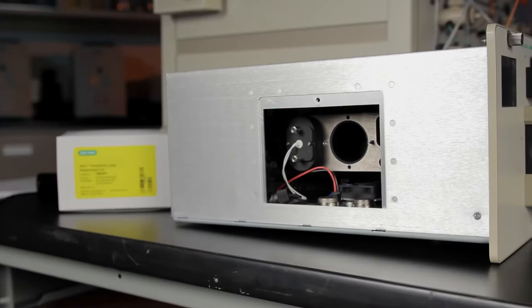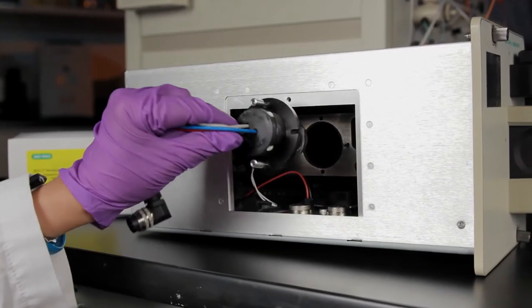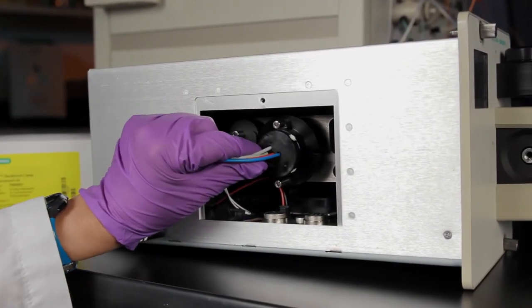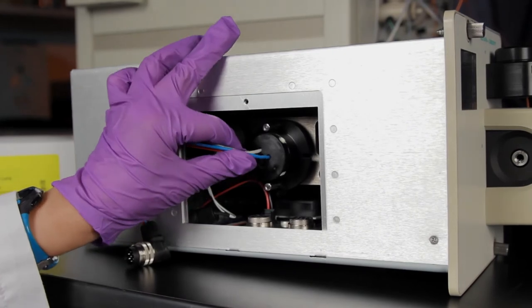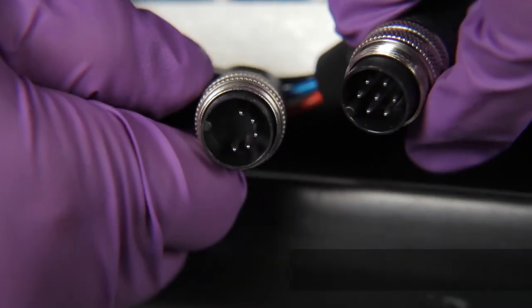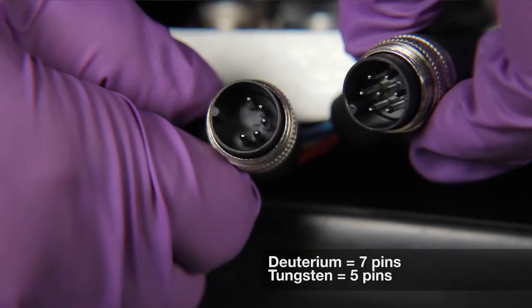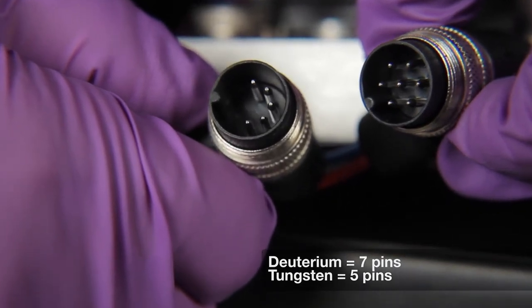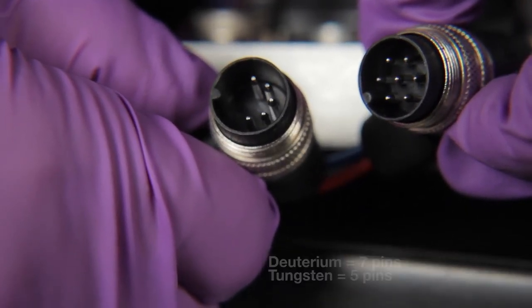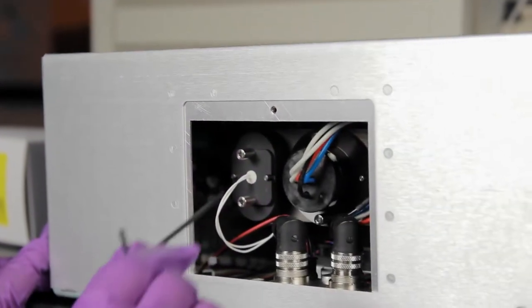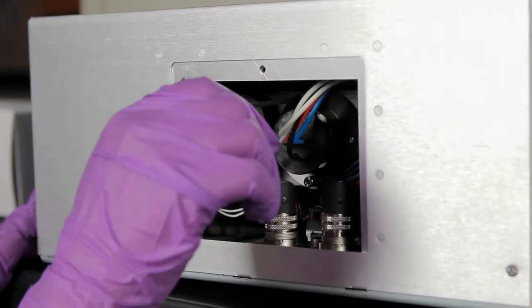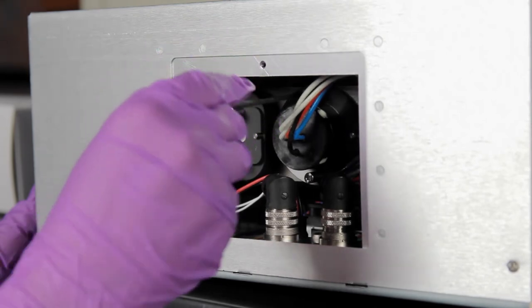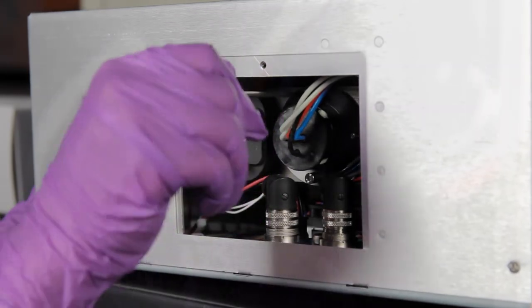Next, carefully insert the replacement lamp into the socket and align the screw holes on the lamp casing. To prevent confusion, the deuterium lamp has a 7-pin connector, while the tungsten lamp uses a 5-pin connector. Now grab your 2.5 millimeter hex wrench again and tighten the screws to secure the lamp. Then insert the cable plug and tighten the collar.